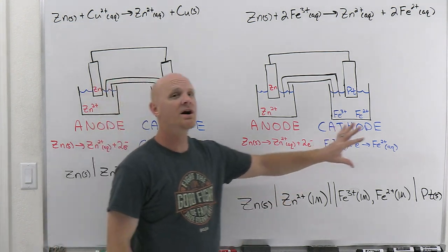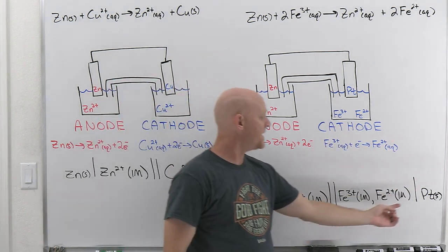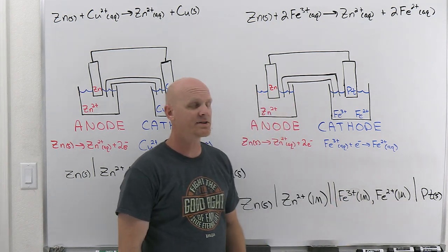But we do have to include the inert electrode as well, and that's platinum solid. And that is in a different phase than the other two, and so we will put a single slash of separation there with a difference in phase yet again. We've still got the anode on the left, we've still got the cathode on the right.